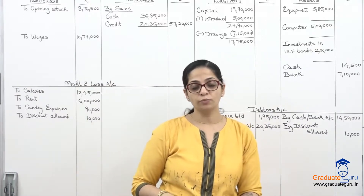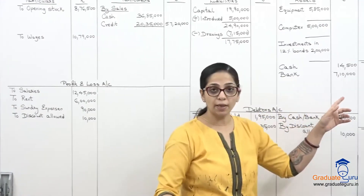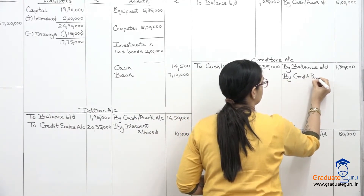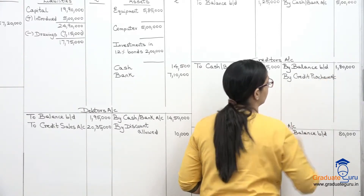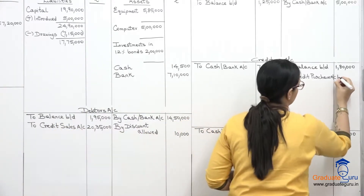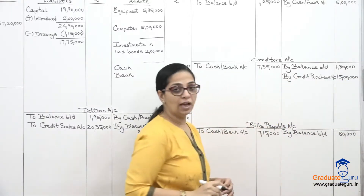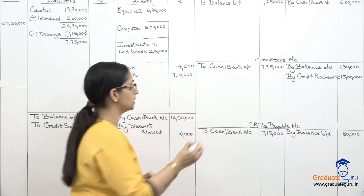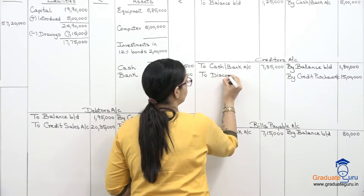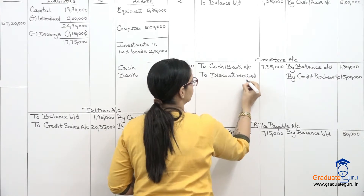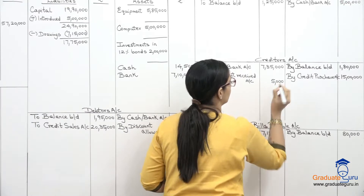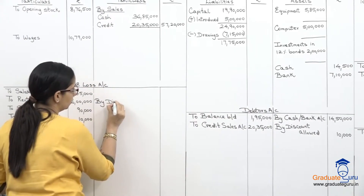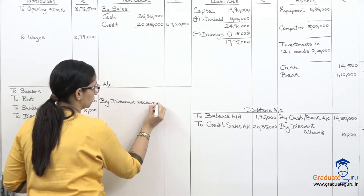Purchases — given as a separate transaction, so this is credit purchase. In creditors account, credit side: 'by credit purchase' fifteen lakhs. Discount received of five thousand is our income — creditors account debit to discount received. In creditors, debit side. In P&L credit side: 'by discount received' five thousand.